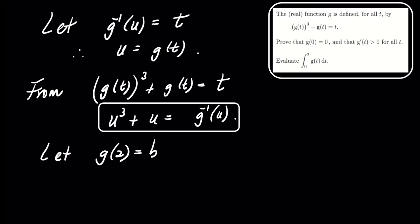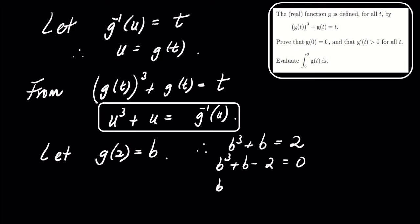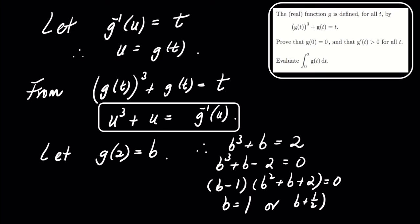Using the fact that g of 2 equals b leads us to the equation b cubed plus b equals 2. This results in b cubed plus b minus 2 equals 0. Factoring yields the expression b minus 1 times the quantity b squared plus b plus 2 equals 0. Thus, b equals 1 is our only real solution, so g of 2 equals 1.